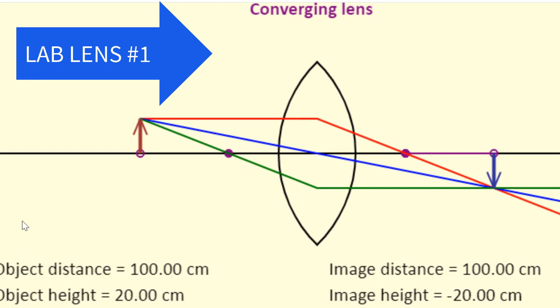Our object's distance is at 100 centimeters away from the lens. Our object's height is 20 centimeters. The image's distance is 100 centimeters. It's pretty convenient. And the image's height is negative 20 centimeters. It's an inverted real image, and it's the same height. That is lab lens number one. So you have to find the focal length of that.